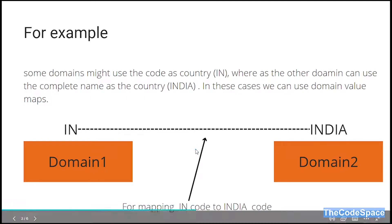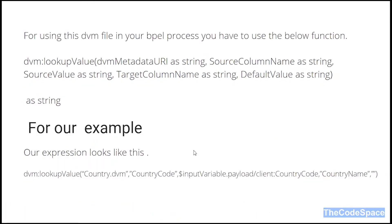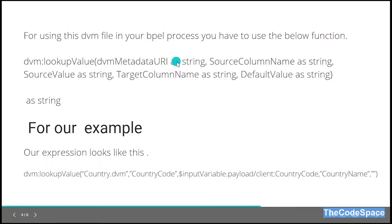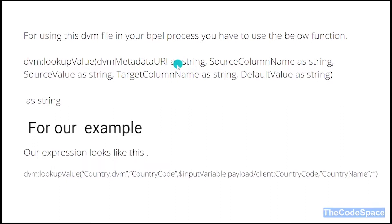This is the DVM lookup value function. The function is 'DVM colon lookup value'. We have to pass five parameters. Don't worry if you're not getting this right now — we'll see it later when we create our project and you will have a good understanding. For now, just understand these things. The first parameter is the DVM metadata URI, which means we pass the DVM name as the first parameter.